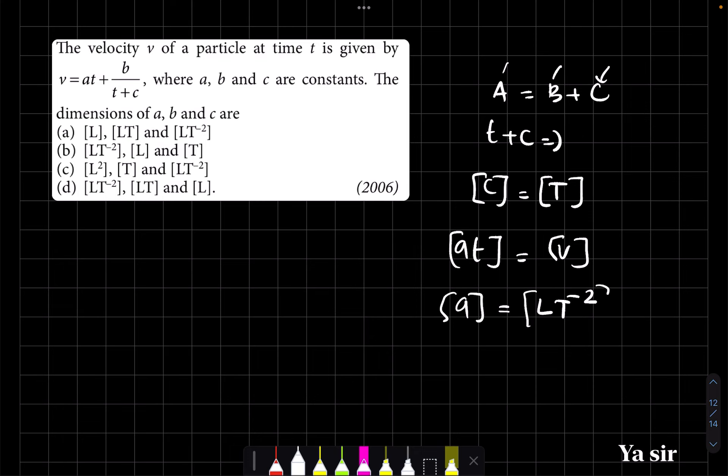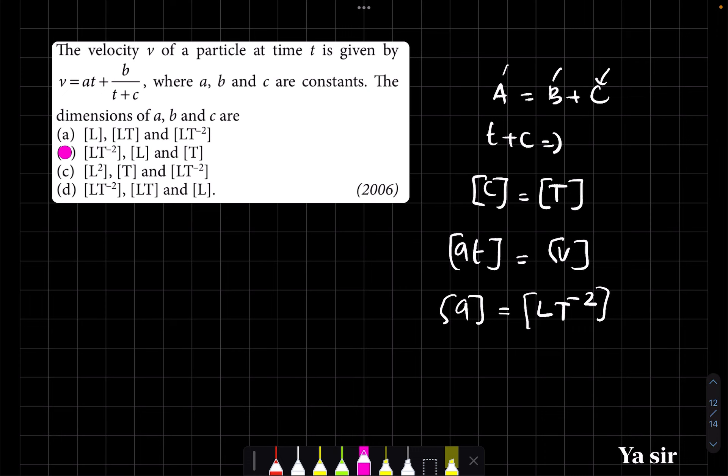a also I got, c also I got. So what is the correct? Look at this. So which is T and T, and a is LT to the power minus 2. Then what about b? So option b, anyways I got it. Option b I got it, the correct option. But I would like to ask you one more question.